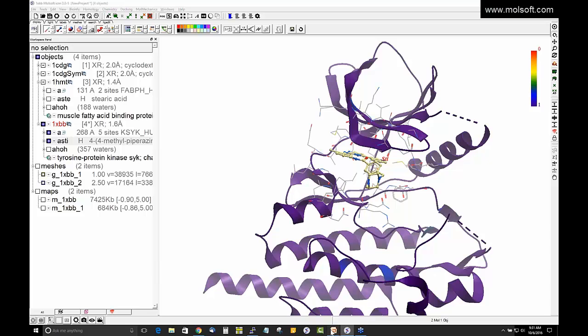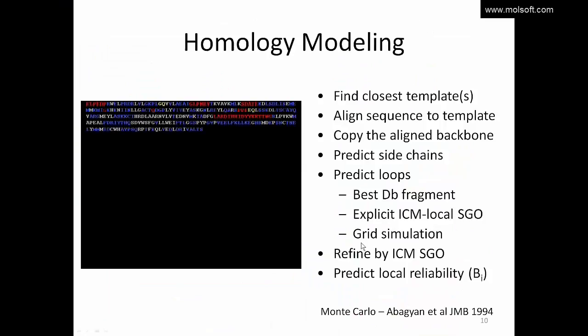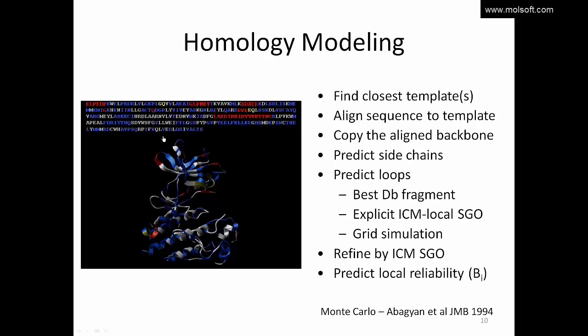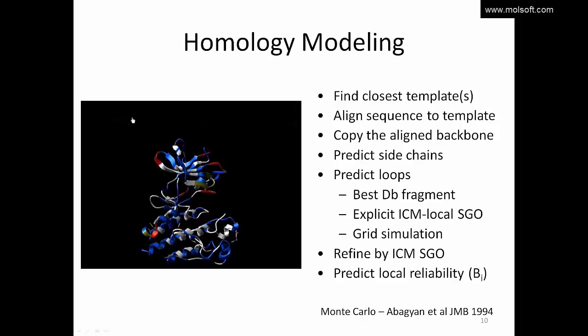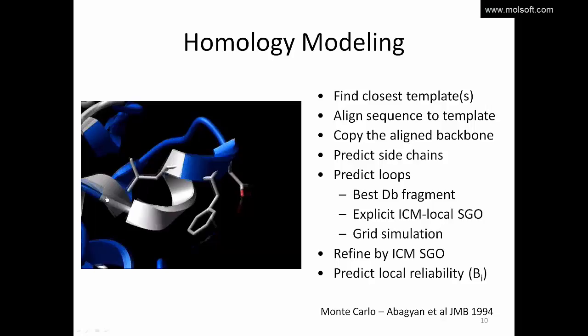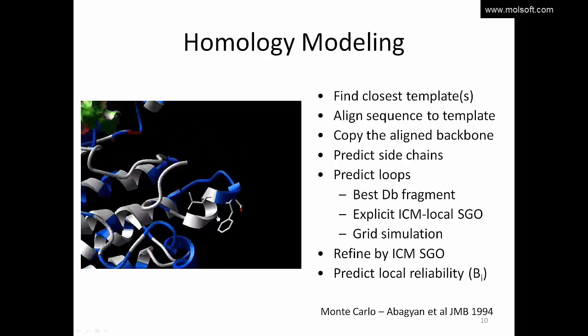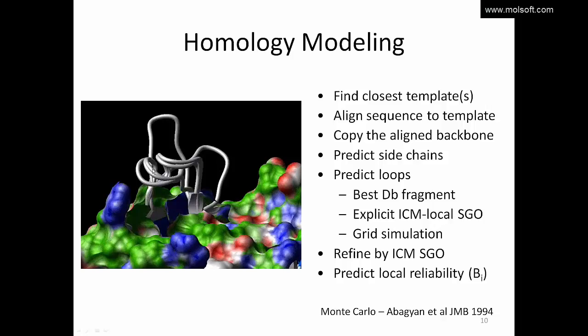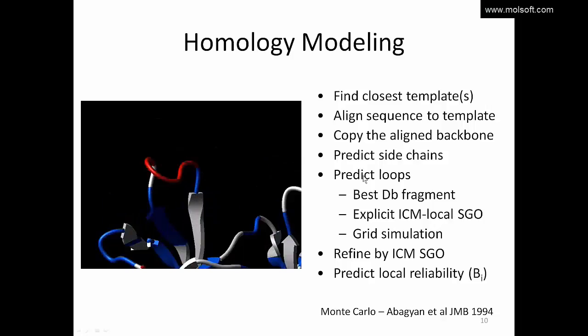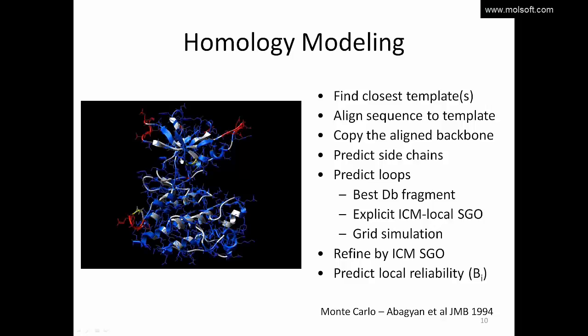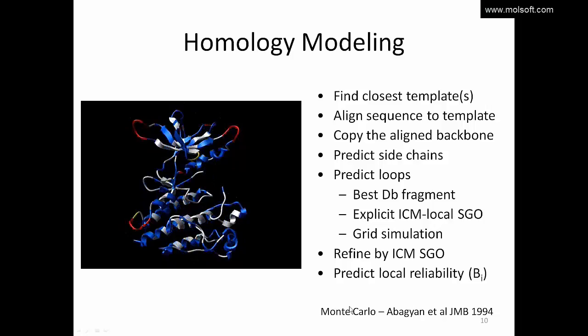Now we're going to move on to homology modeling. In homology modeling, you have a query sequence, go to the PDB to find the closest template structure, align the sequences to the template, and copy the aligned backbone atoms. Then you predict side chain conformations. The most challenging part is regions with no good homology, such as loops. Once you have your model, you refine it and fix regions with clashes or poor geometry. In ICM we use the method called ICM Bias Probability Monte Carlo, described in a paper by Ruben Abagyan and Max Totchoff at MolSoft.